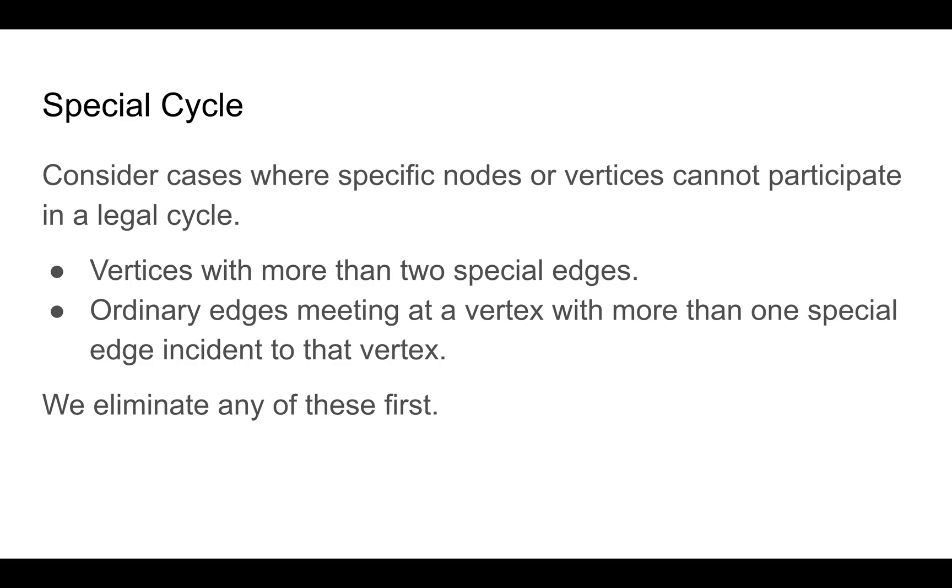In this problem, we are asked to find a cycle in a graph such that any edges marked special are always reversed if either of the vertices in that special edge are part of the cycle.